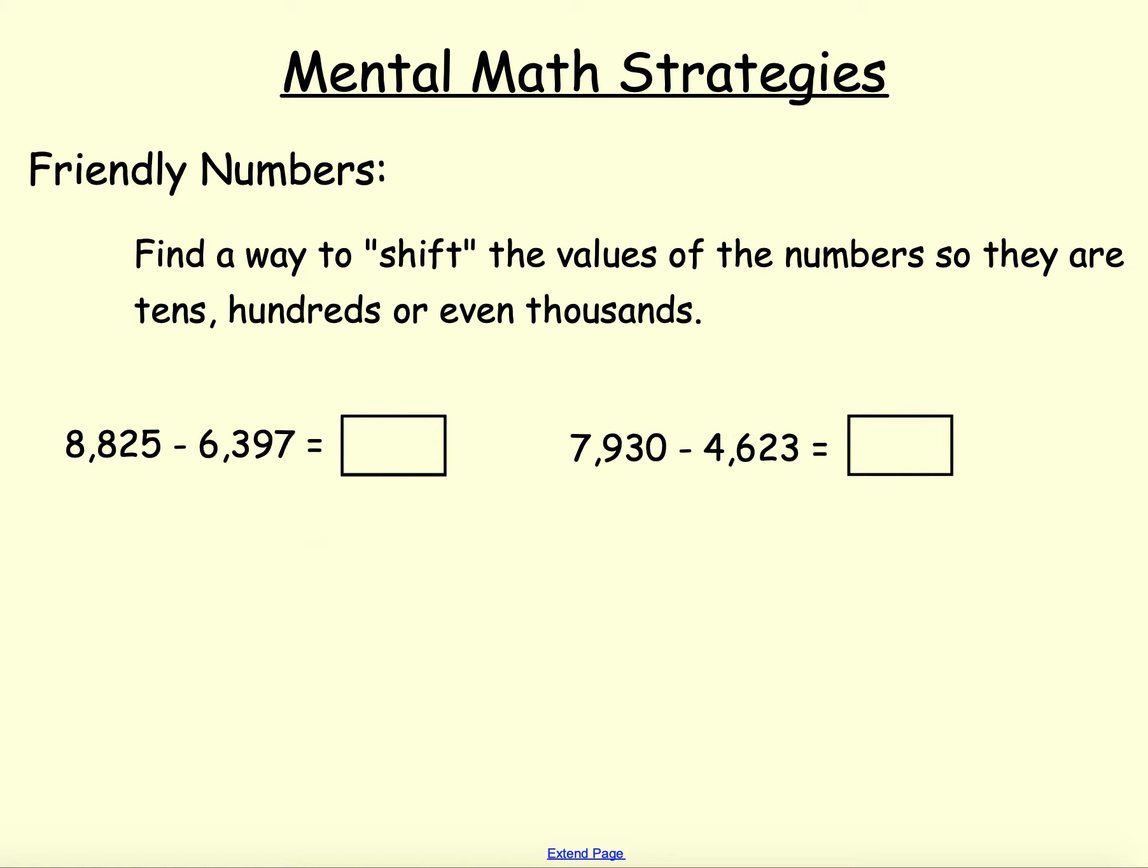Let's look at a couple more examples. Even larger numbers. I'm in my 8,000 here. 8,825 minus 6,397. Well, 397, if I just add three more to it, I'm going to be at 6,400. So 8,825 minus 6,400 equals 2,425. But look, I took too many away. So what do I need to do? I need to put those three back in. 2,425 plus those three extras is 2,428. So 8,825 minus 6,397 is 2,428.